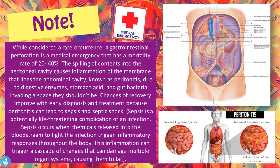While considered a rare occurrence, a gastrointestinal perforation is a medical emergency that has a mortality rate of 20 to 40%. The spilling of contents into the peritoneal cavity causes inflammation of the membrane lining the abdominal cavity, known as peritonitis, due to digestive enzymes, stomach acid, and gut bacteria invading the space they shouldn't be. Chances of recovery improve with early diagnosis and treatment because peritonitis can lead to sepsis and septic shock.